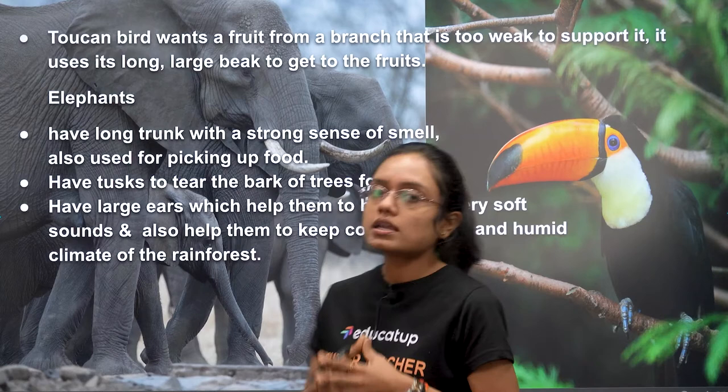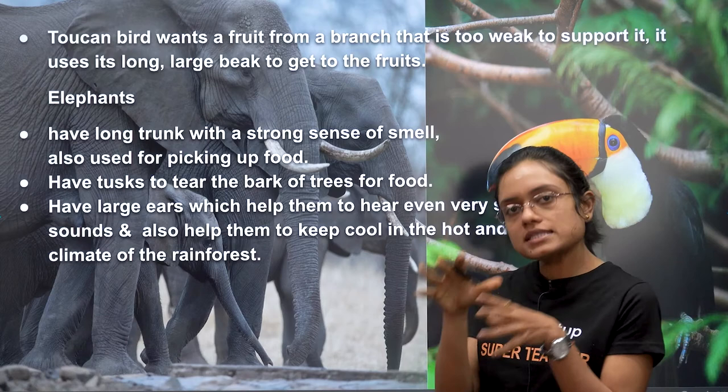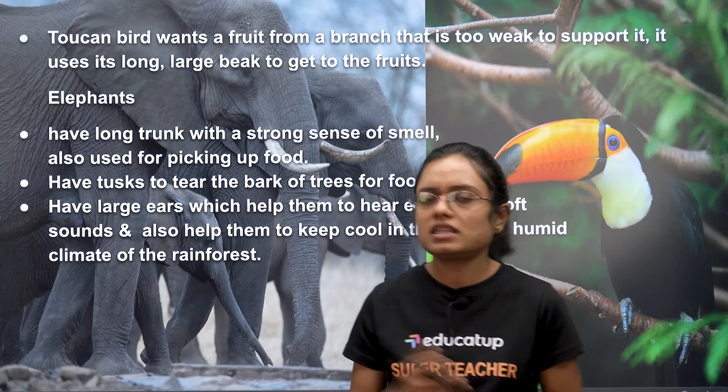The toucan is a bird that reaches for fruit on weak branches, using its large beak to snatch the fruit easily.